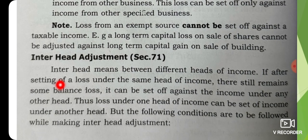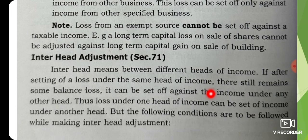Inter-head adjustment means adjustment between different heads of income — such as income from salary, income from house property, profits and gains of business or profession, capital gains, and income from other sources. If after setting off a loss under the same head of income there still remains some balance loss, it can be set off against income under any other head.